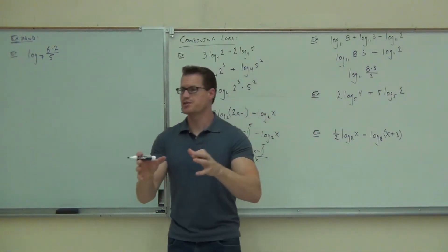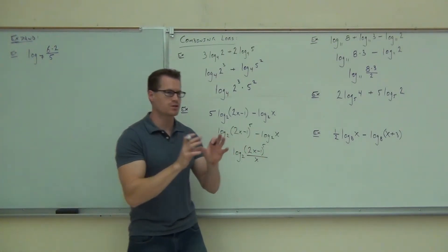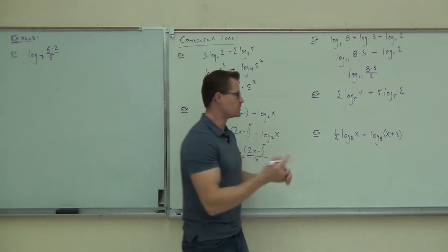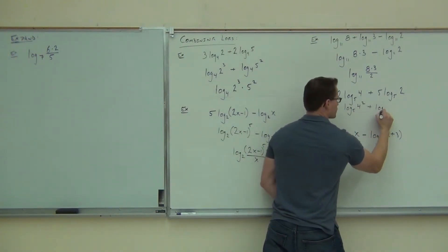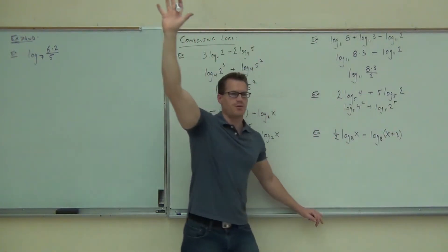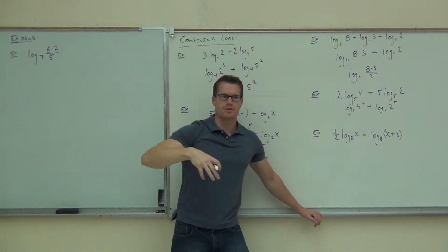Okay, first one. First thing we got to deal with is any numbers in front of our logarithm because those things are exponents. You cannot combine logs if there are numbers in front of your logs. You can't do it. So here we have to do first log base 5 of 4 squared plus log base 5 of 2 to the 5th. Raise your hand if you made it that far. Good deal. You did that first.